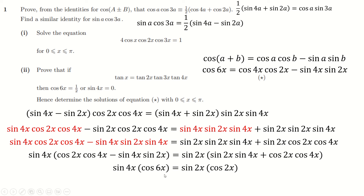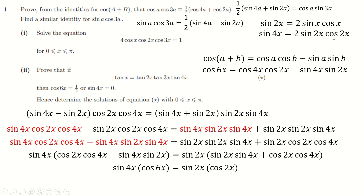So things are going really well now — a much simpler expression. How do we make progress? The sin(2x) term sitting next to cos(2x) reminds me of the double angle formula up here. Doubling all the angles gives sin(4x) = 2sin(2x)cos(2x), so half sin(4x) equals sin(2x)cos(2x). Substituting that in, we have sin(4x) on both sides — if sin(4x) = 0, that's one solution. Getting rid of those leaves cos(6x) = 1/2, which is the other solution they were looking for.